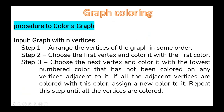A procedure to color a graph: Input a graph with n vertices. Step one: arrange the vertices of the graph in some order. Step two: choose the first vertex and color it with the first color. Step three: choose the next vertex and color it with the lowest-numbered color that has not been used on any adjacent vertex. If all adjacent vertices are colored with that color, assign a new color to it. Repeat until all vertices are colored.